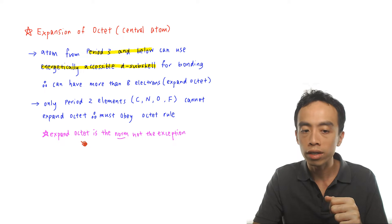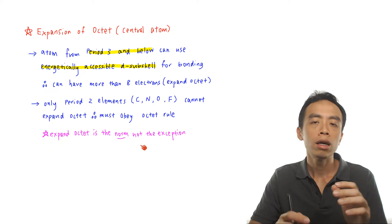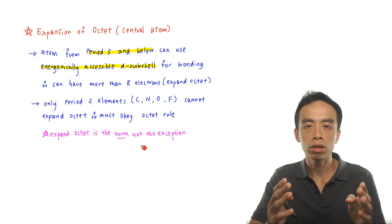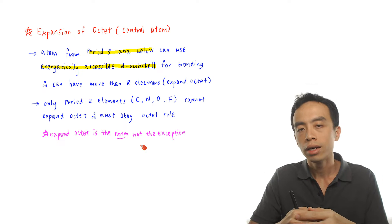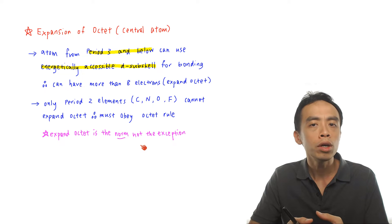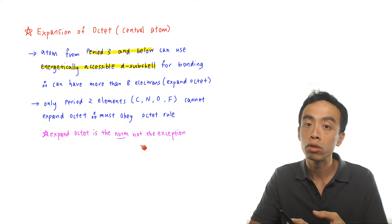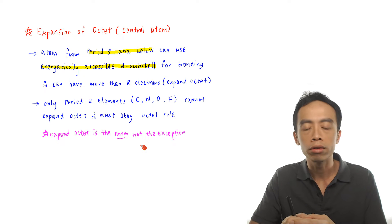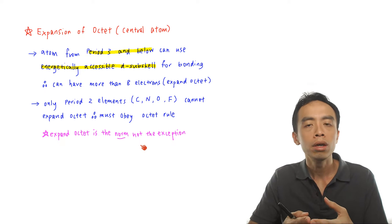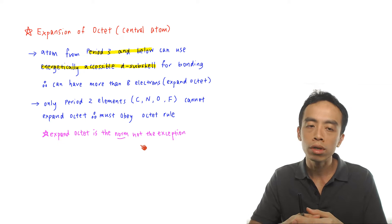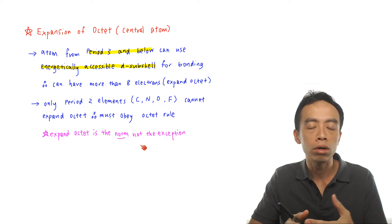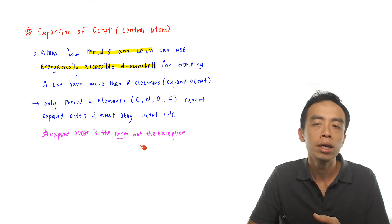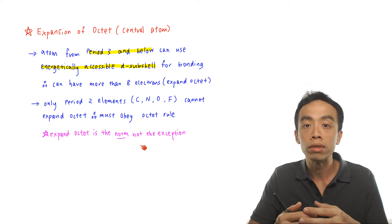Remember, expansion of octet is actually the norm — it is not the exception. It will take some time to get the hang of it, especially since we are very comfortable with the octet rule and think it must always be obeyed. But at A-level chemistry, only very few elements — only period 2 elements — must obey the octet rule. All the rest of the elements, if they can expand octet, they would. We want to explain why this is the case, and what it means to make use of the d-subshell for bonding.